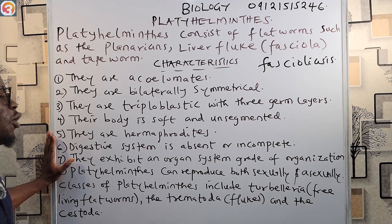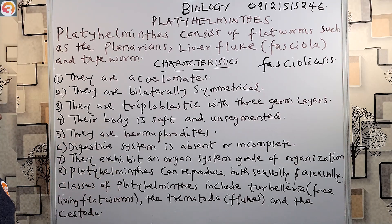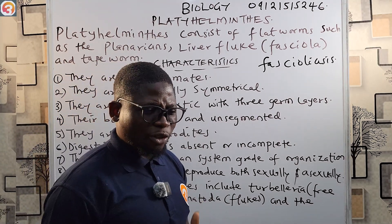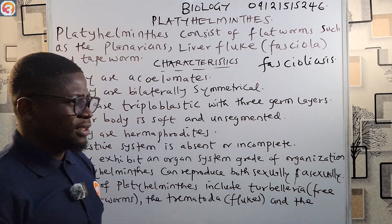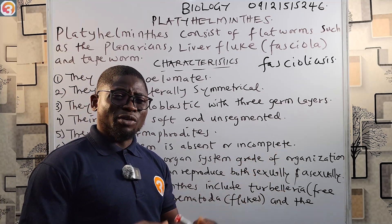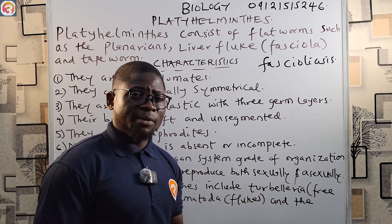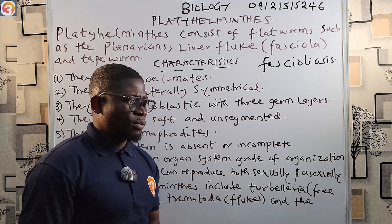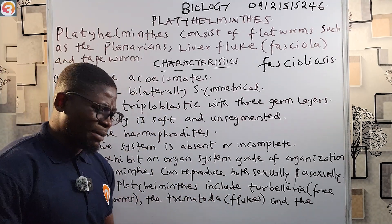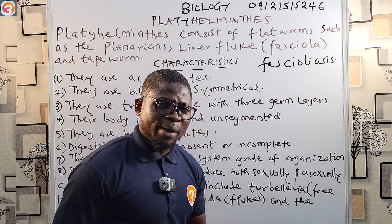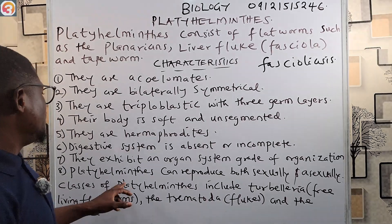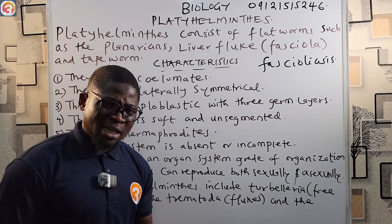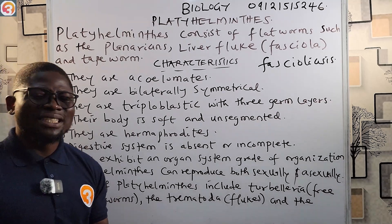Seven: they exhibit an organ system grade of organization, where two or more organs combine to perform a specific function. They have only one opening — the pharyngeal opening — which is used for both feeding and excretion, since they have no anus.